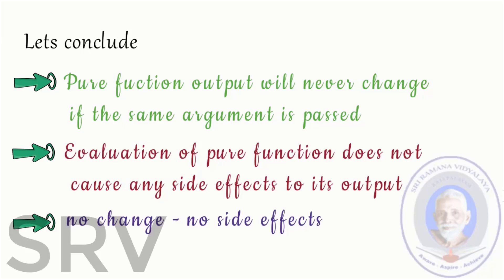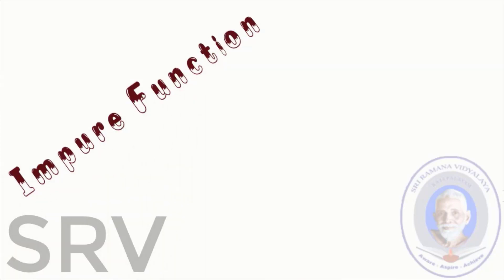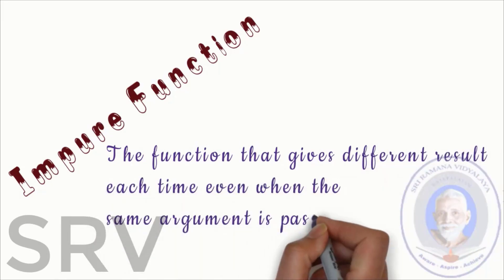Pure functions means no change, that is output will always remains the same when the same argument passed to a function. Such functions are called pure functions. Next we are going to see about impure functions. The function that gives different result each time even when the same argument is passed is called impure function.